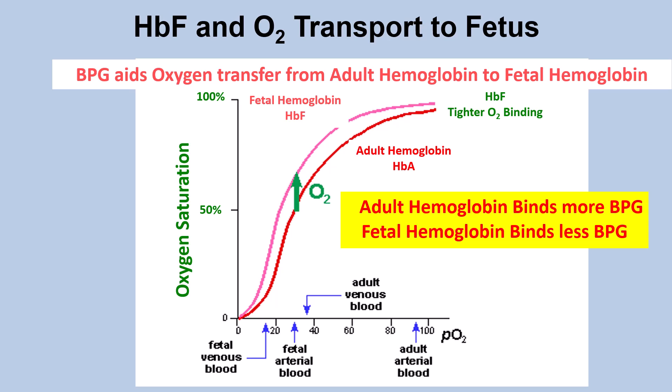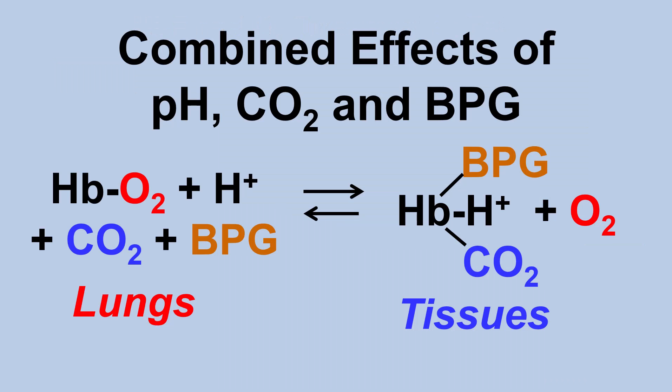HbF is fetal hemoglobin, and BPG aids oxygen transfer from adult hemoglobin to fetal hemoglobin, which is critical for keeping the fetus alive. Fetal hemoglobin has a higher affinity for O2 than adult hemoglobin because it has lower BPG binding — adult hemoglobin binds more BPG, fetal hemoglobin binds less. The combined effects are: hemoglobin binds oxygen in the lungs, then as protons, CO2, and BPG bind to hemoglobin in the tissues, O2 is released, achieving higher tissue PCO2.